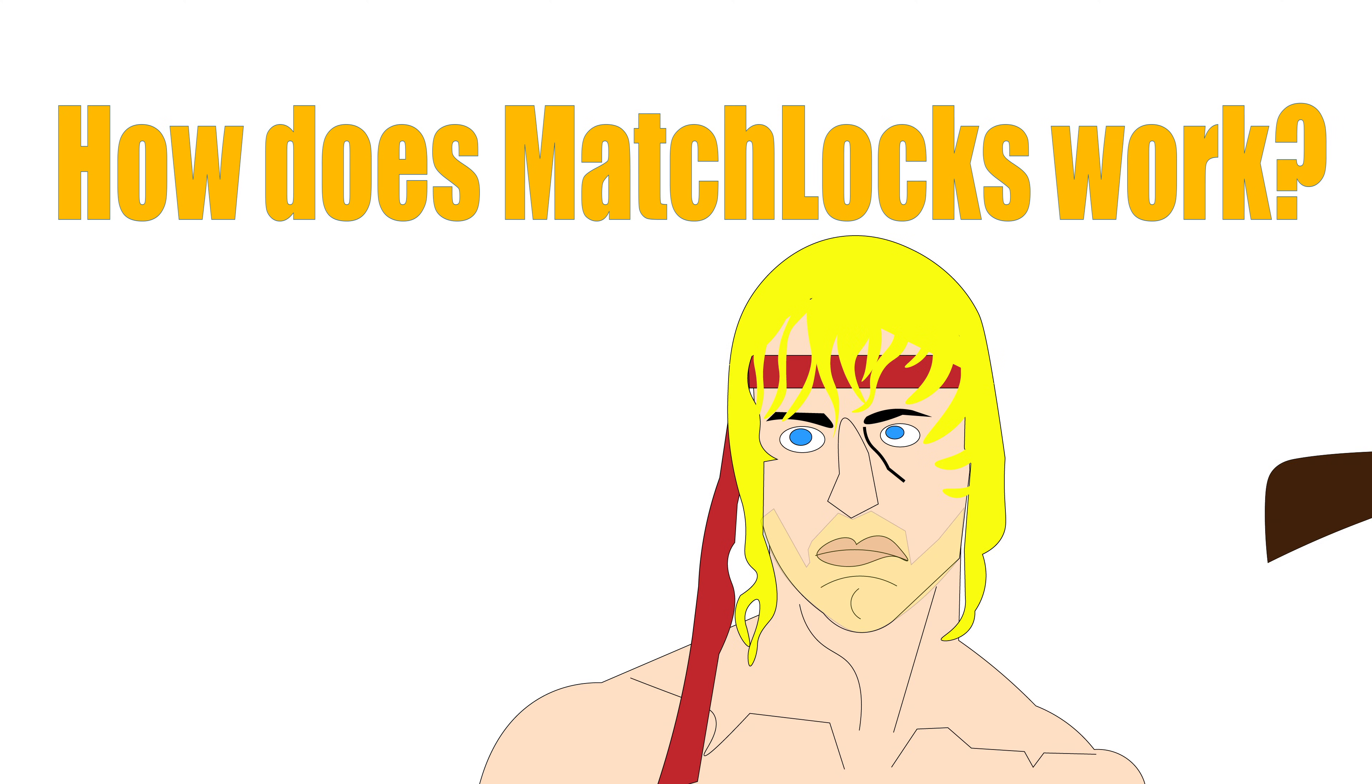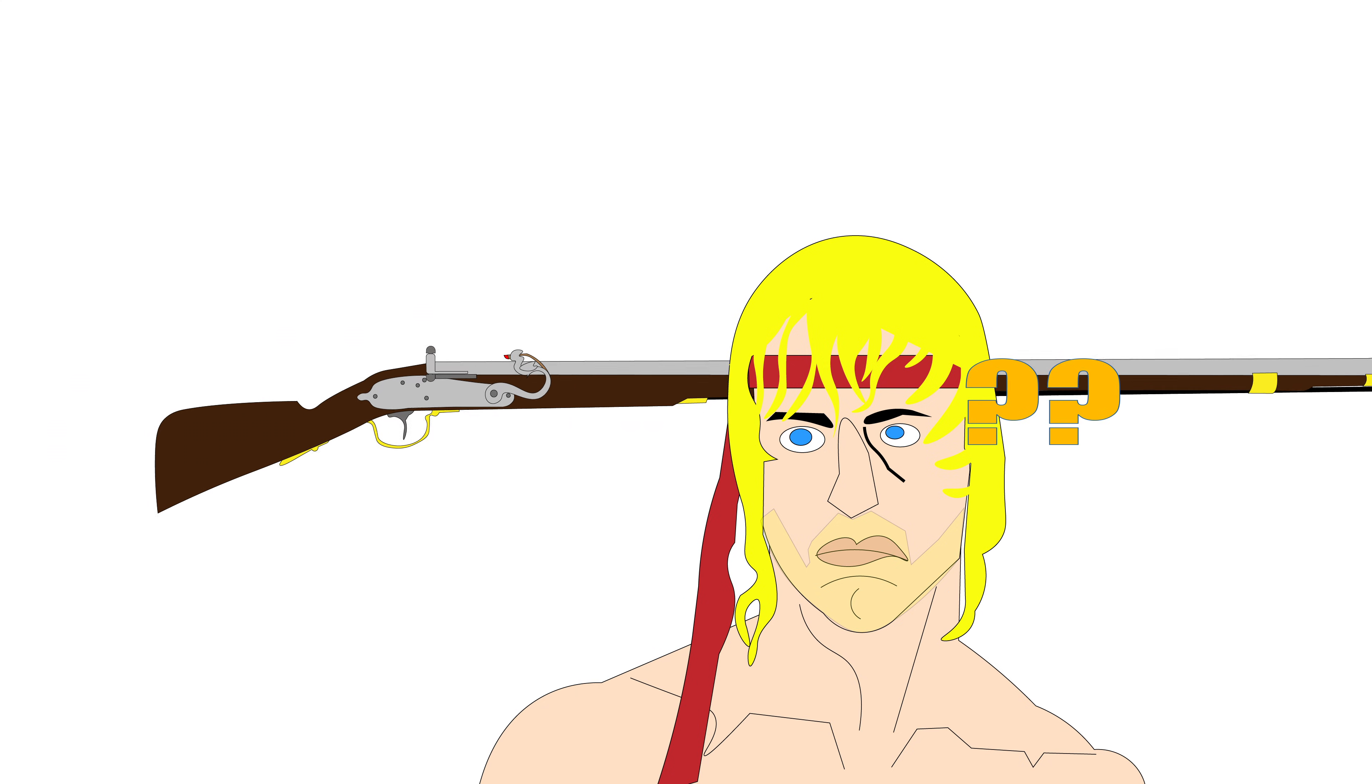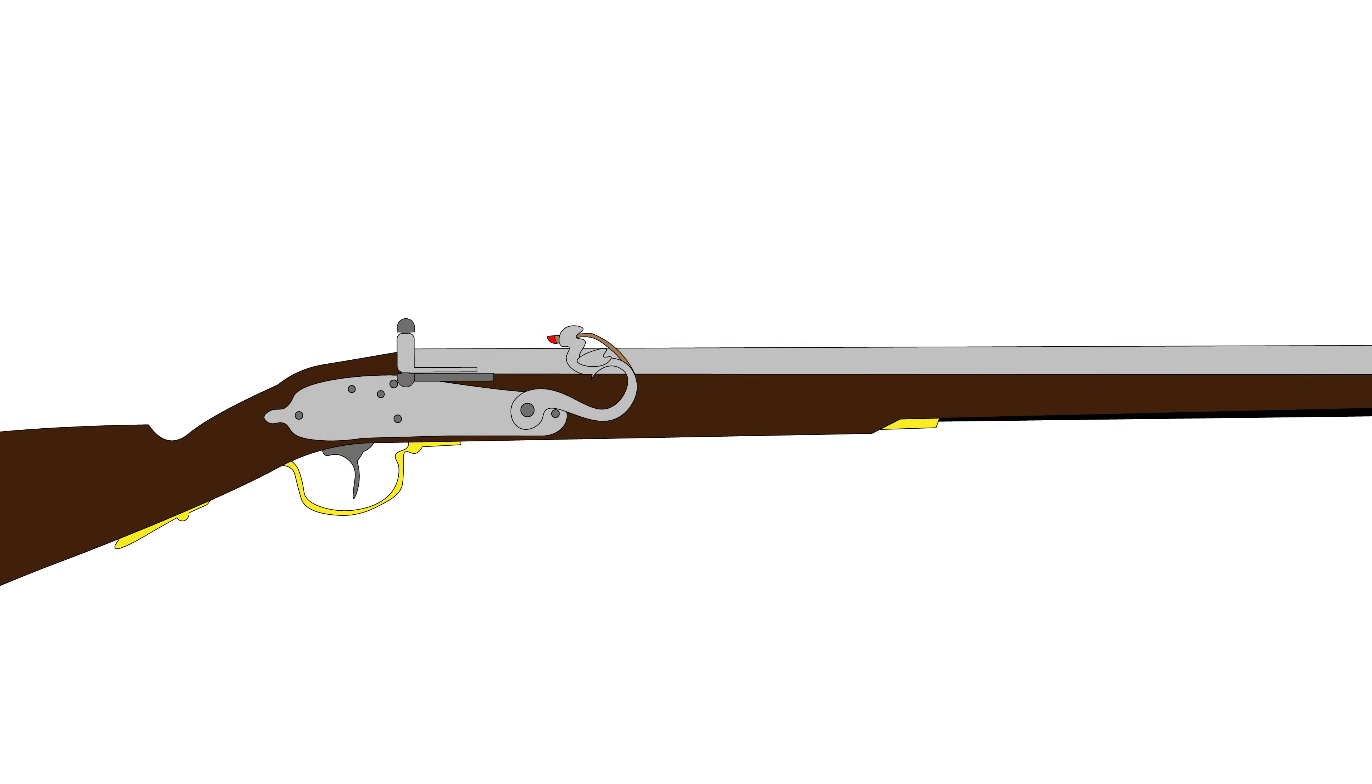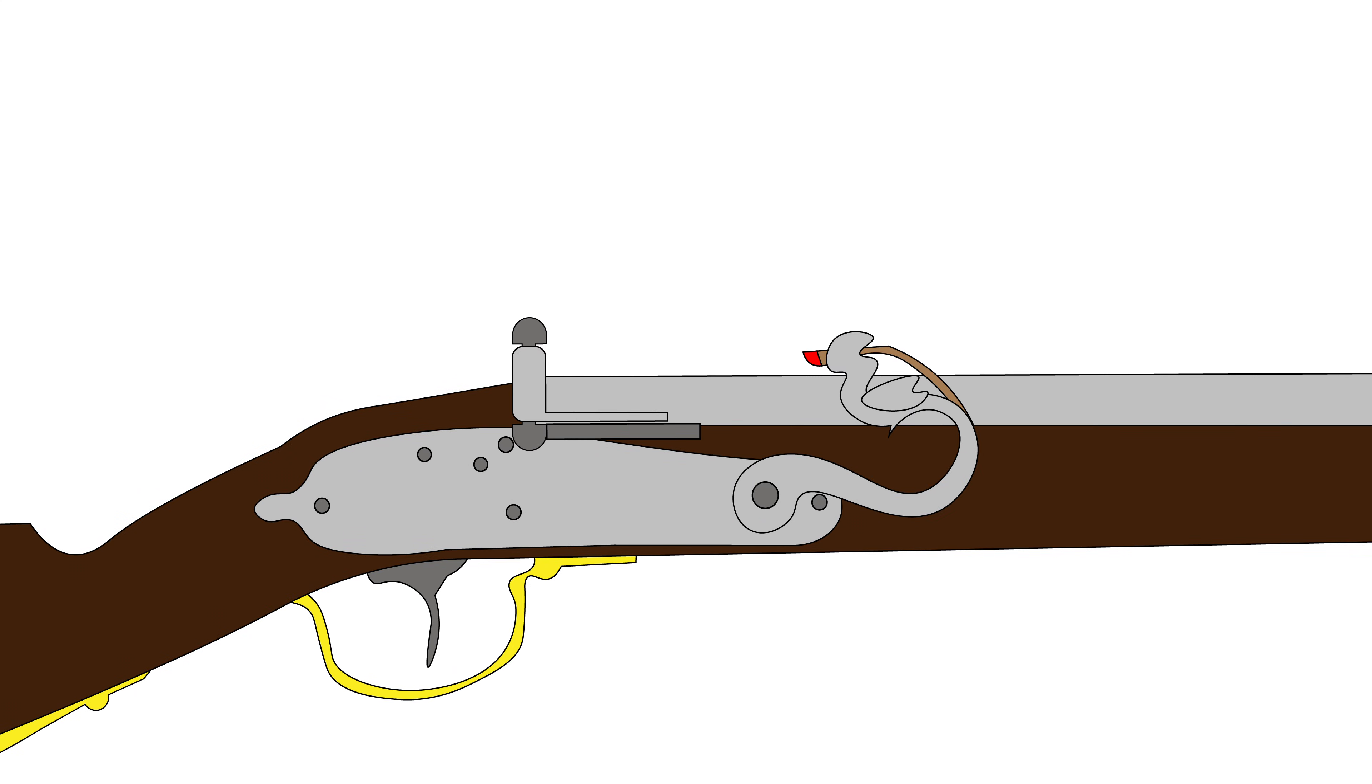Hey there, have you ever wondered about how the matchlock works? The matchlock is a type of firing mechanism for early handheld firearms like arquebuses and muskets. As its name implies, the firing system utilizes a smoldering match cord held by the serpentine.